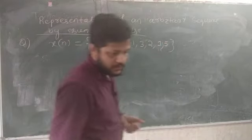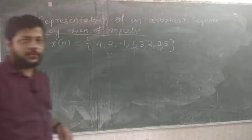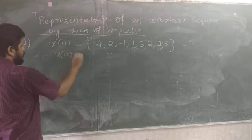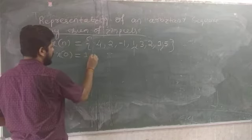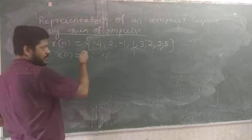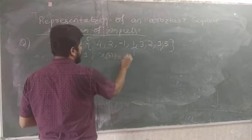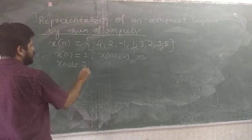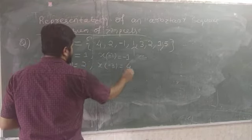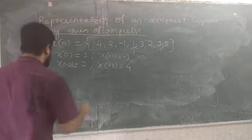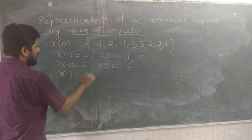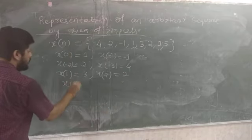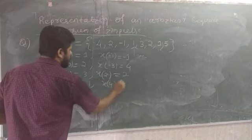For the next example, a sequence is given with an arrow marking n=0. Reading off the values: x(-3)=4, x(-2)=2, x(-1)=-1, x(0)=1, x(1)=3, x(2)=2, x(3)=1, x(4)=5. The arrow at x(0)=1 indicates the time origin.